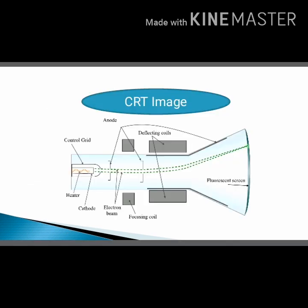In this slide we have the CRT image. CRT initially has some important parts: the cathode, cathode source, and heater. There is also a control grid which helps to control the electron beam, and we have four anodes and a focusing coil.